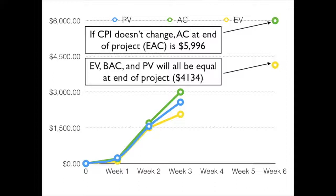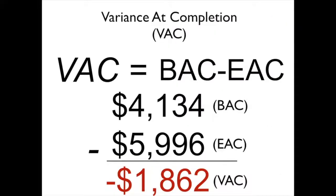So what we can do now is calculate what that variance is — how much are we predicted to be off from our estimates? Our variance at completion is simply the BAC minus the EAC. We take the difference between those two values, and in this case, it looks like we're going to be over budget by $1,862.